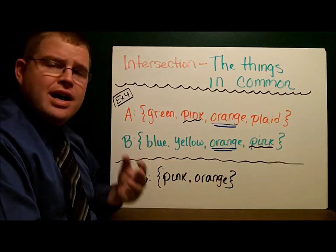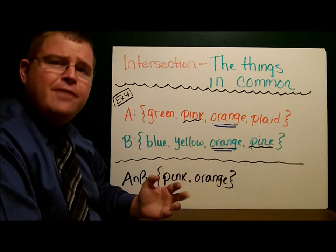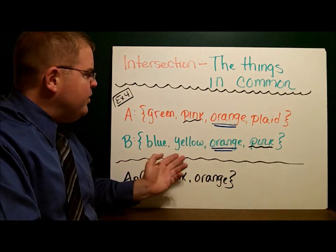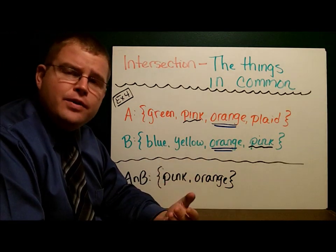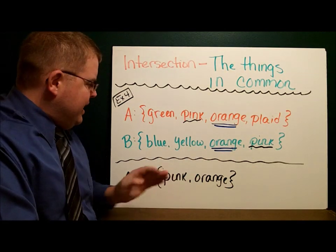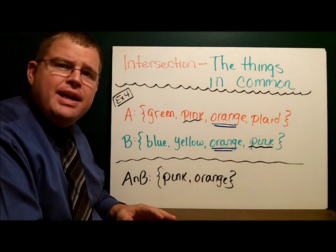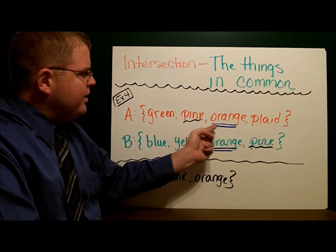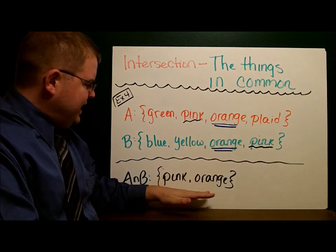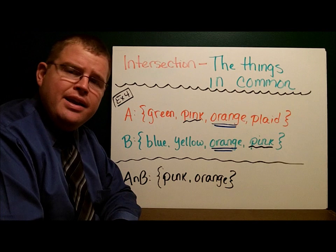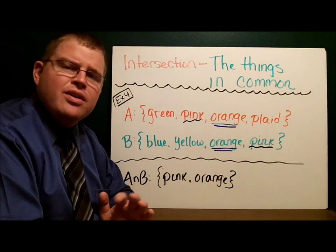Here we have our colors again. Green, pink, orange, plaid for set A. Blue, yellow, orange, pink for set B. A intersect B means what do sets A and B have in common. They both have pink, they both have orange. And so A intersect B is simply the set pink, orange.